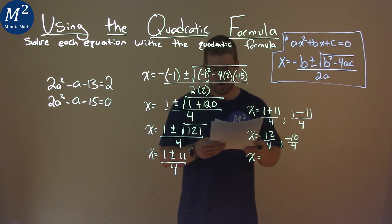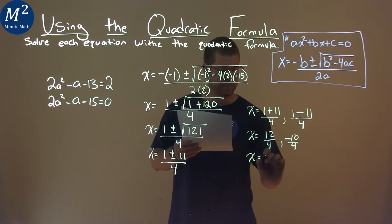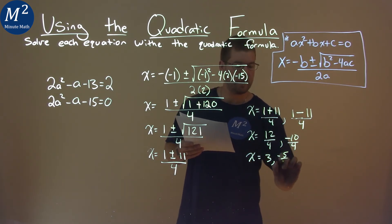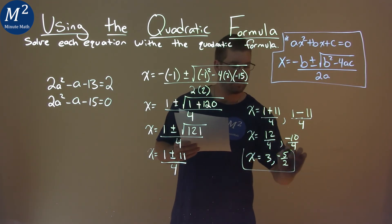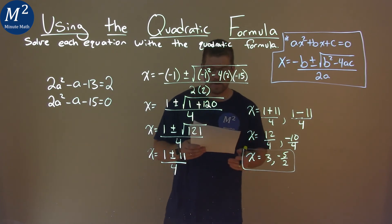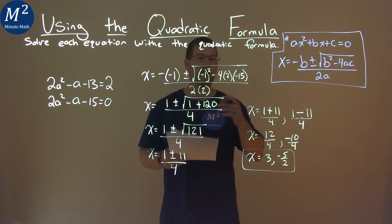Keep going. 12 divided by 4 is 3, and negative 10 divided by 4 is negative 5 halves. So our final answer is x equals 3 and negative 5 halves.